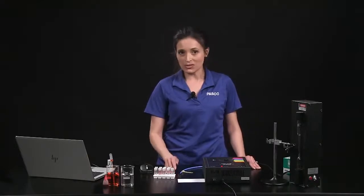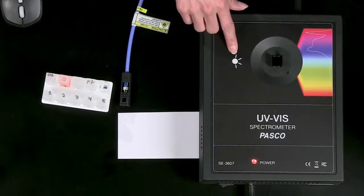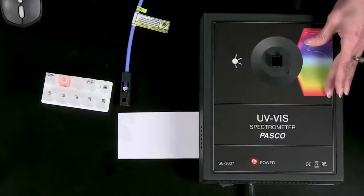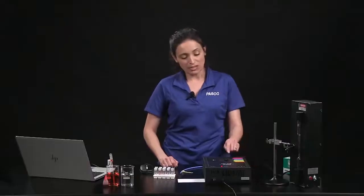The spectrometer's light source is located here, below the white light graphic, and the light detector is located on the side with the colorful visible light graphic. The cuvettes are placed here.